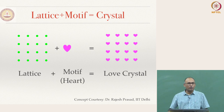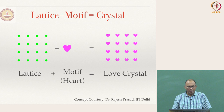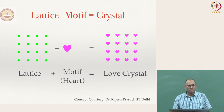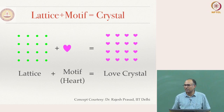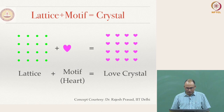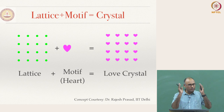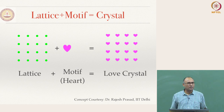For example, say these are your lattice points, and you have a heart as your motif. Place a heart at each and every position and you get a 'heart crystal.' Replace that with a football and you get a football crystal. Replace it with theta and you get a theta crystal. You can construct any case — that is the idea.